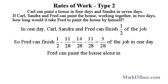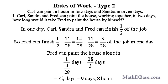Fred can finish painting the entire house in 1 over 3/28 days, which equals 28 over 3 days, or nine and a third days — that is, nine days and eight hours.